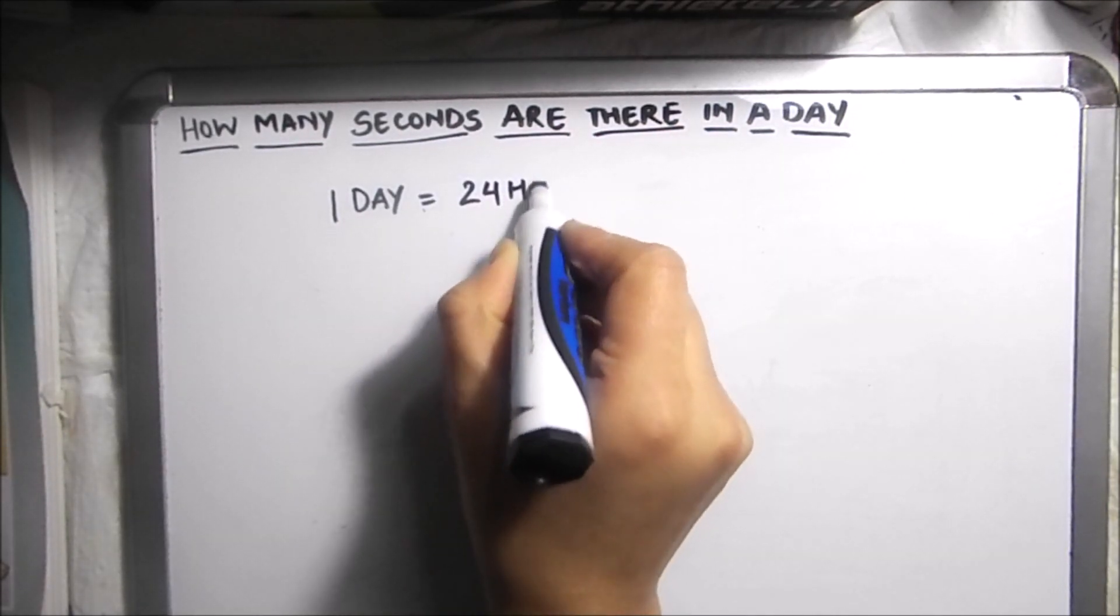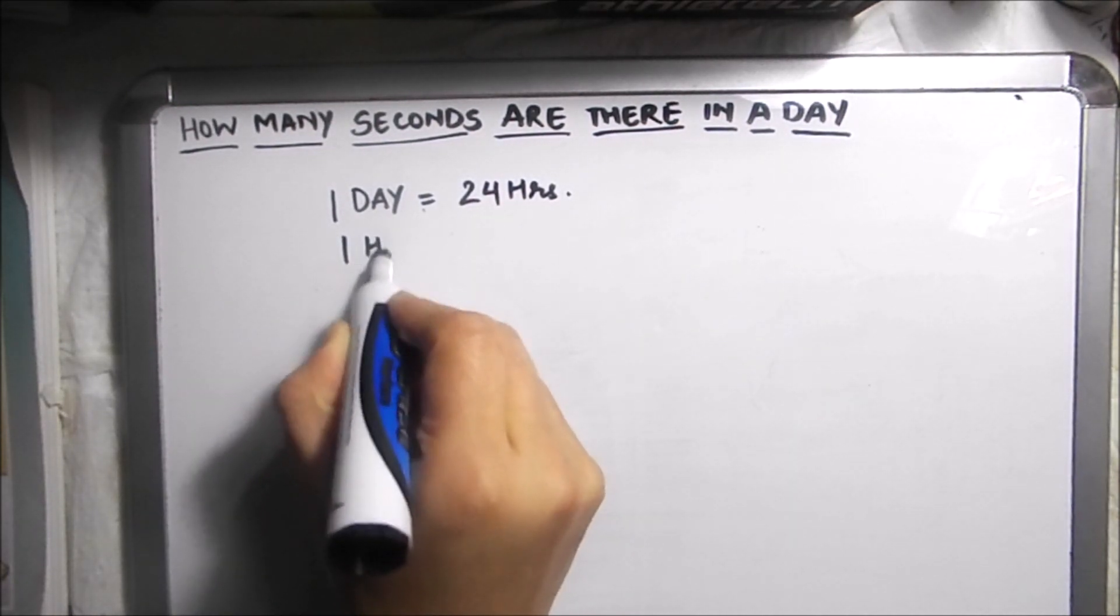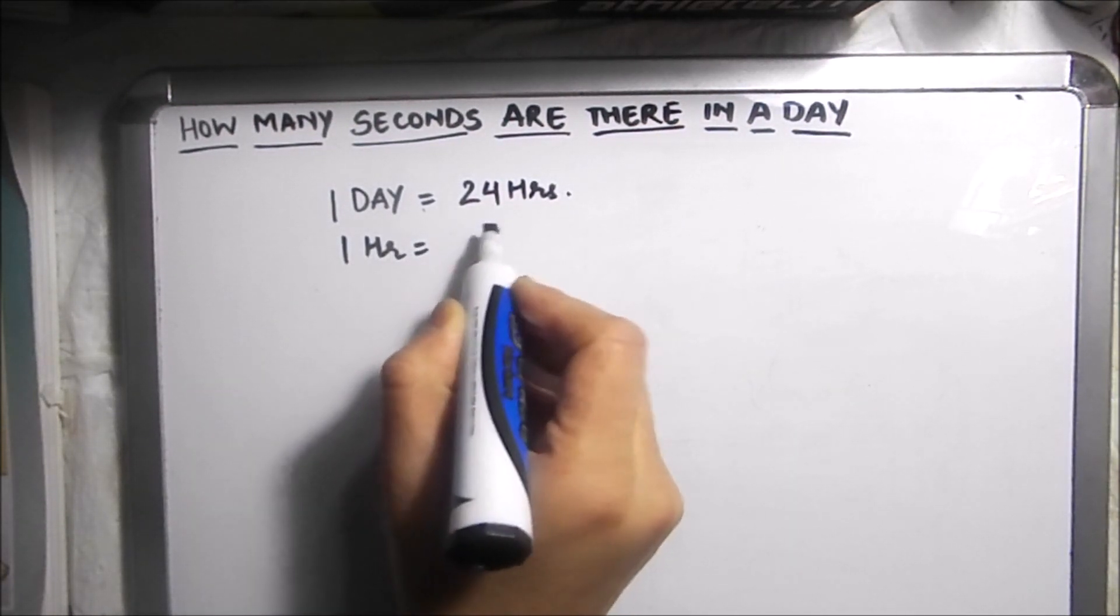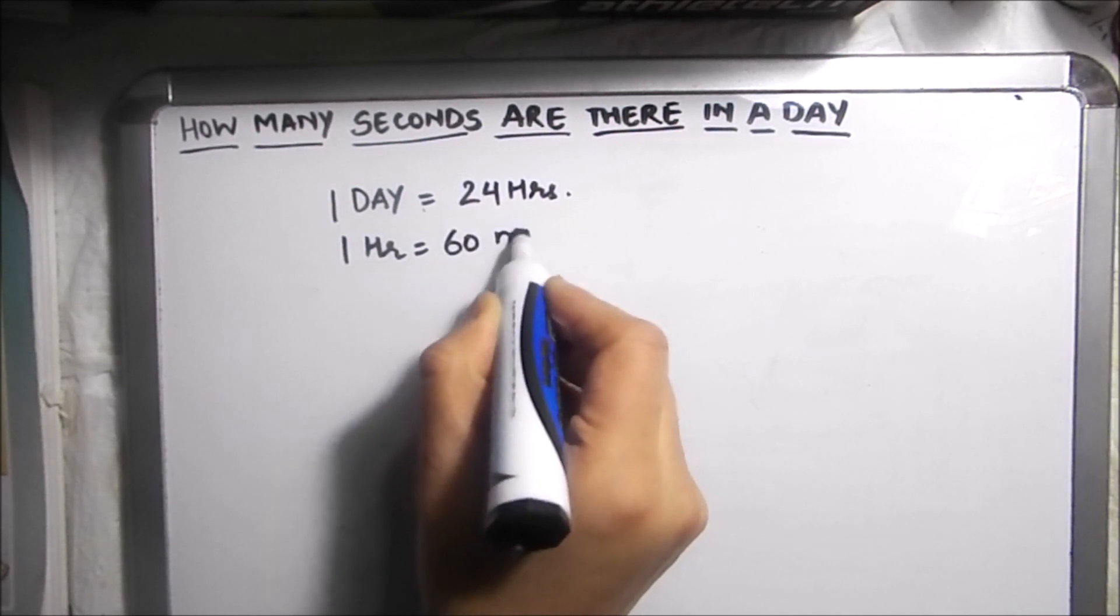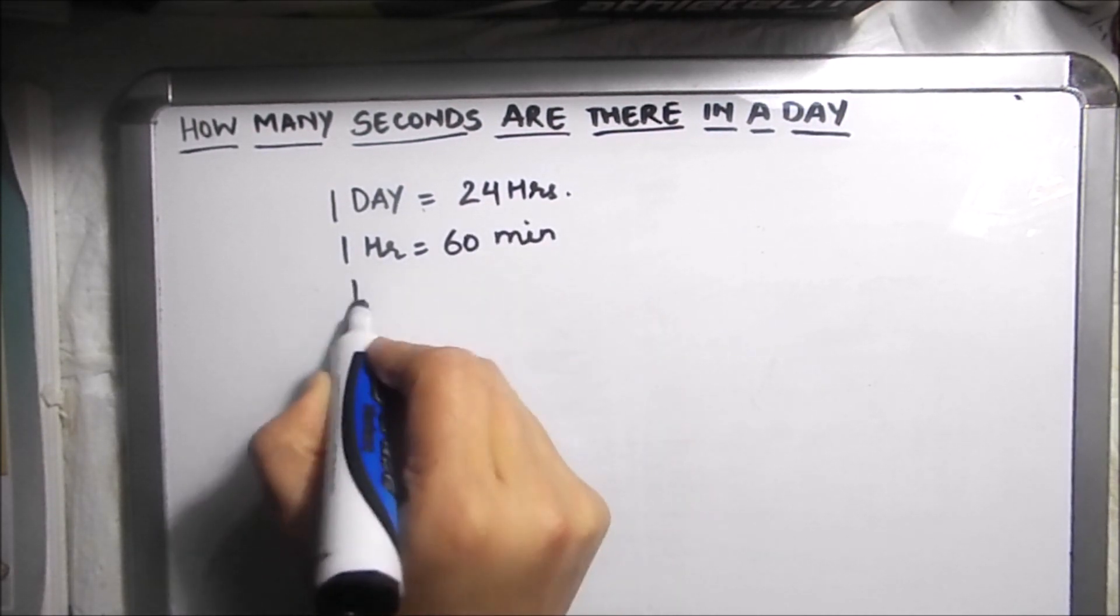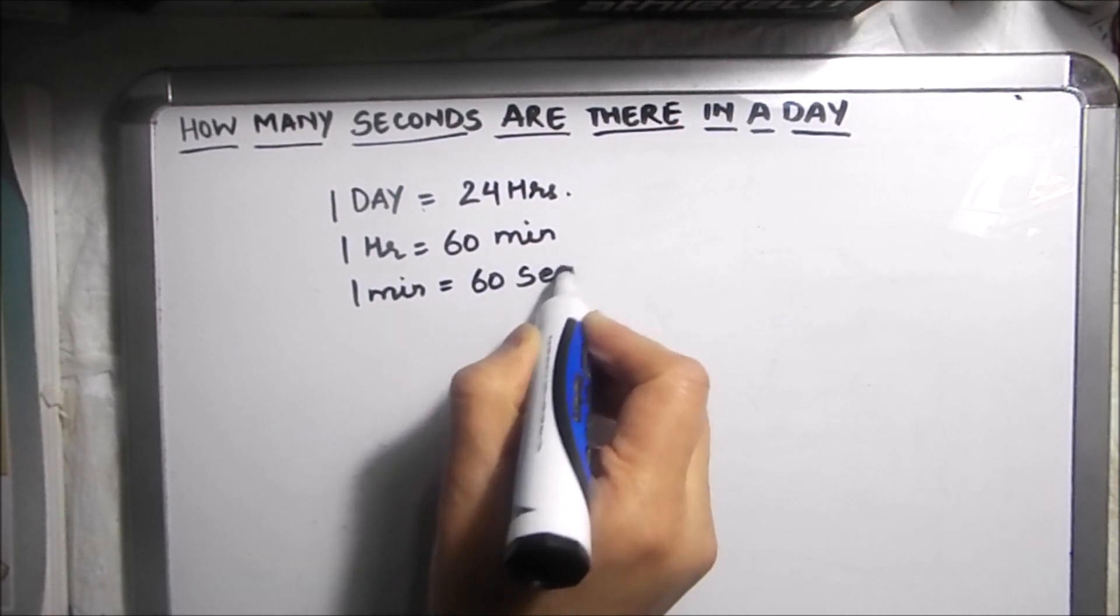And we also know that one hour is 60 minutes and one minute is 60 seconds. So we are going to use these relations to find how many seconds are there in a day.